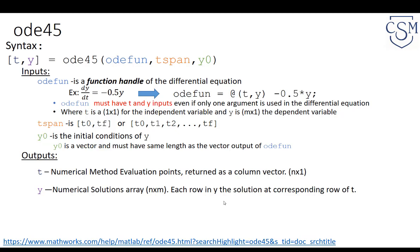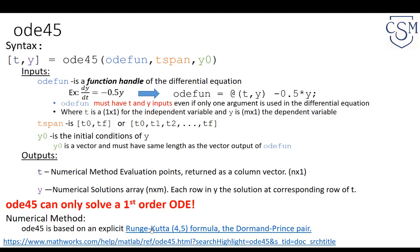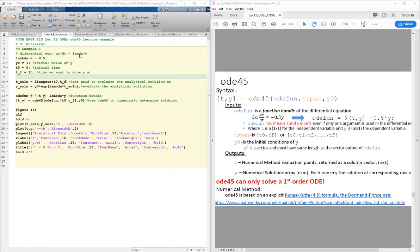ODE45 can only solve first-order ODEs, so we'll learn how to get around this for higher-order differential equations. The method is Runge-Kutta 4-5, specifically the Dormand-Prince pair method. A link to the Wikipedia page is provided. It is highly more accurate than RK4 and also more stable than RK4.